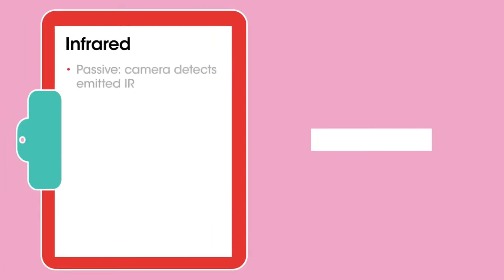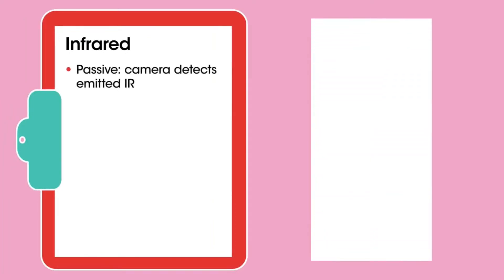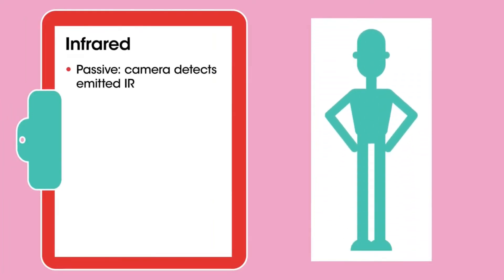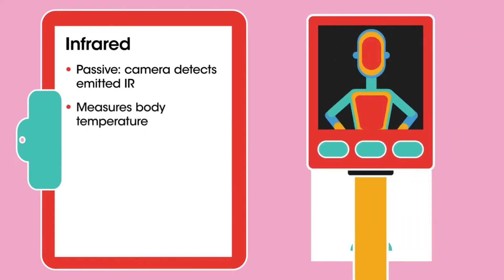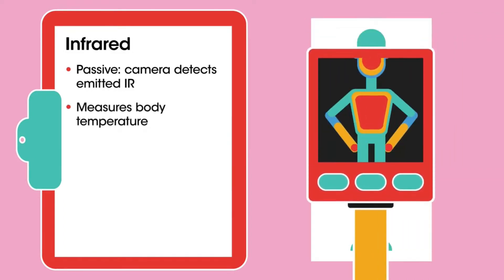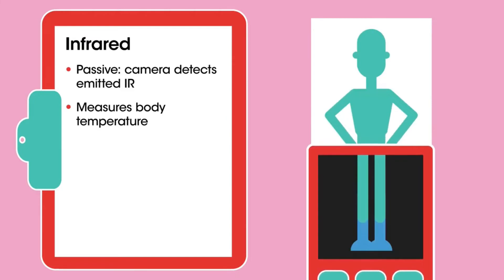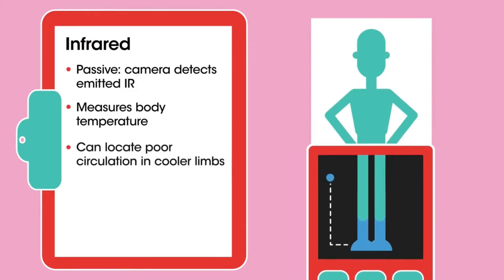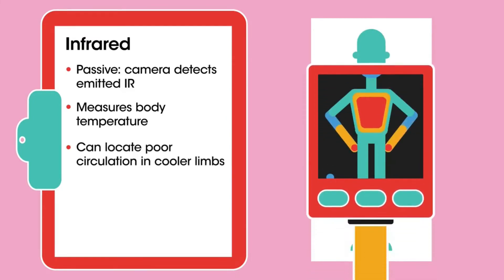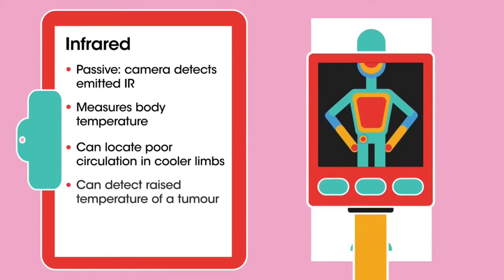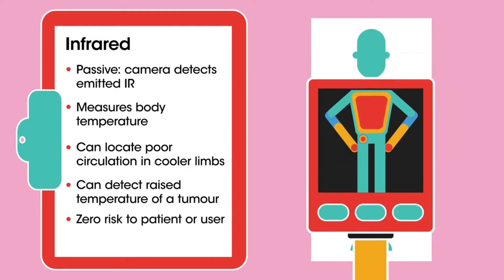Infrared. This is a passive imaging technique. The infrared camera merely detects heat given off by the patient. Detecting local variations in skin temperature may show regions with poor circulation or the presence of tumours. A slightly raised temperature can be a quick check for illness before symptoms have appeared. This is useful for scanning crowds in an airport, for example. There is zero risk unless you drop the camera on your foot.